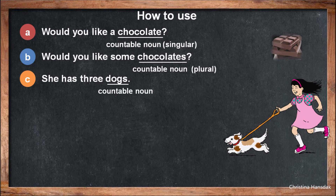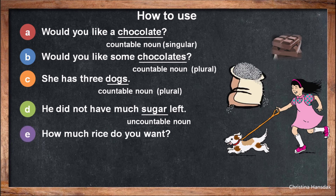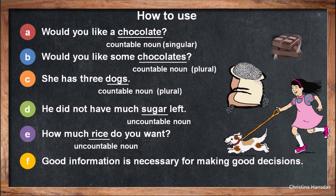(c) 'She has three dogs.' — 'dogs' is a countable noun, plural. (d) 'He did not have much sugar left.' — 'sugar' is an uncountable noun. (e) 'How much rice do you want?' — 'rice' is an uncountable noun. (f) 'Good information is necessary for making good decisions.' — 'information' and 'decisions' are uncountable nouns.